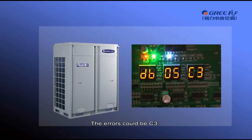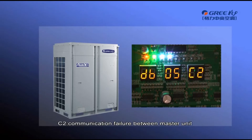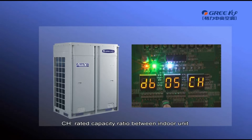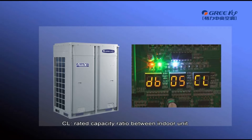The errors could be C3, communication failure between master unit and vent driver; C2, communication failure between master unit and compressor driver; CH, rated capacity ratio between indoor unit and outdoor unit is too high; or CL, rated capacity ratio between indoor unit and outdoor unit is too low.